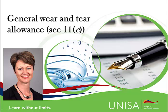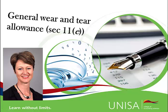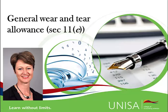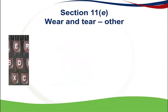This VODCAST is about the general wear and tear allowance on movable assets. This allowance is claimed on assets used in the taxpayer's trade, which do not qualify for any other deduction or allowance. Typical examples include computers, vehicles, furniture and so on.